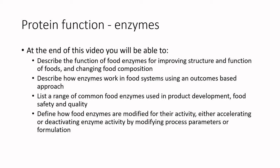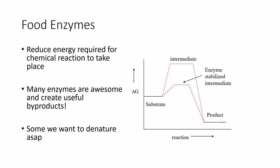So, food enzymes — what is an enzyme? Well, it's a protein. These proteins are sort of little factories within biological systems. Enzymes are ways of catalyzing chemical reactions that occur within biological systems, and they reduce the energy required for that chemical reaction to take place.